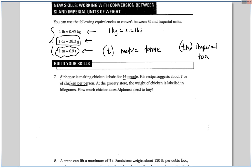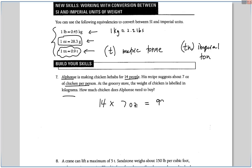Alright, Question 7. Alphonse is making chicken kebabs for 14 people. His recipe suggests about seven ounces of chicken per person. And at the grocery store, the weight of a chicken is labeled in kilograms. So how much chicken does Alphonse need to buy? So he needs to buy for 14 people, and each person needs about seven ounces. So 14 times seven, 98 ounces altogether. So how many kilograms does he need? Well, I know that one ounce is 28.3 grams. So 98 ounces would be x grams.